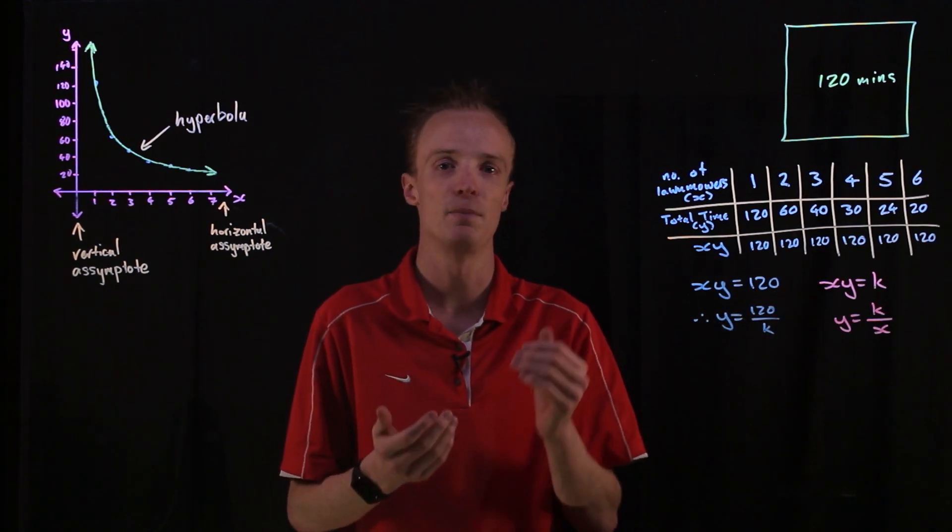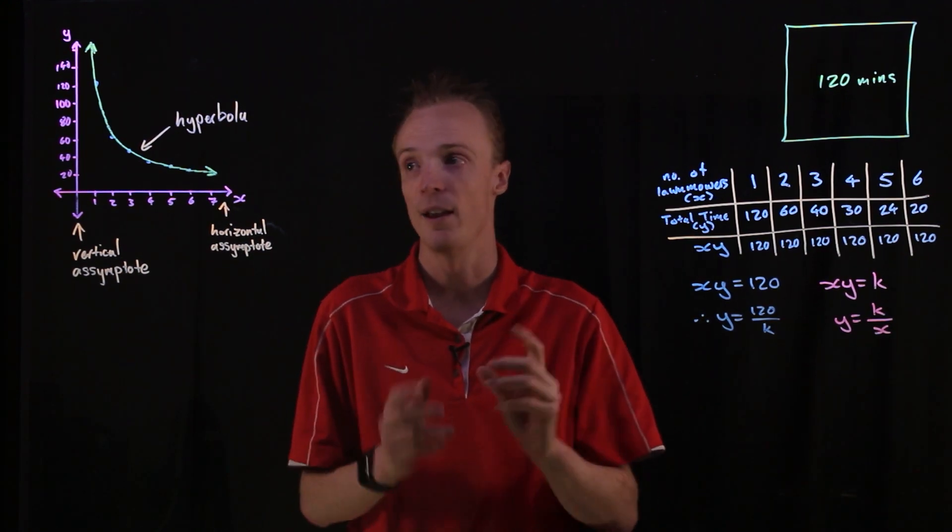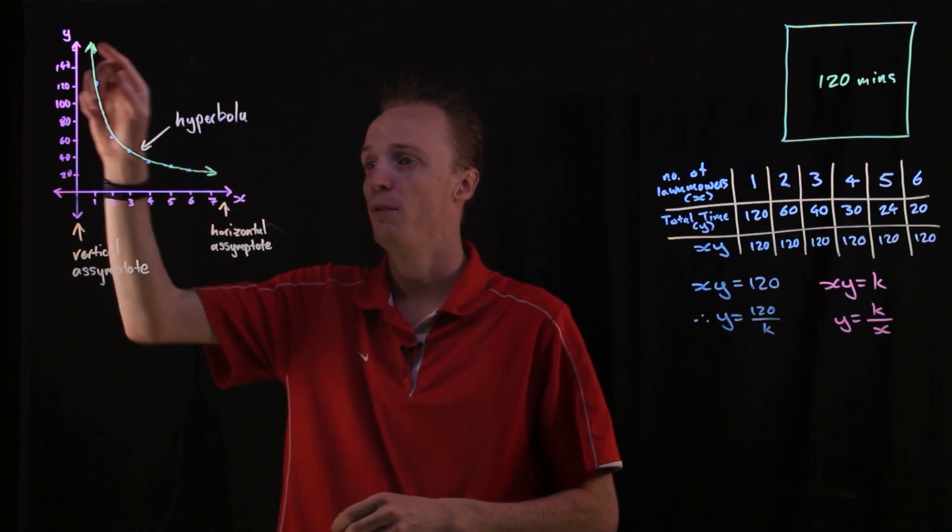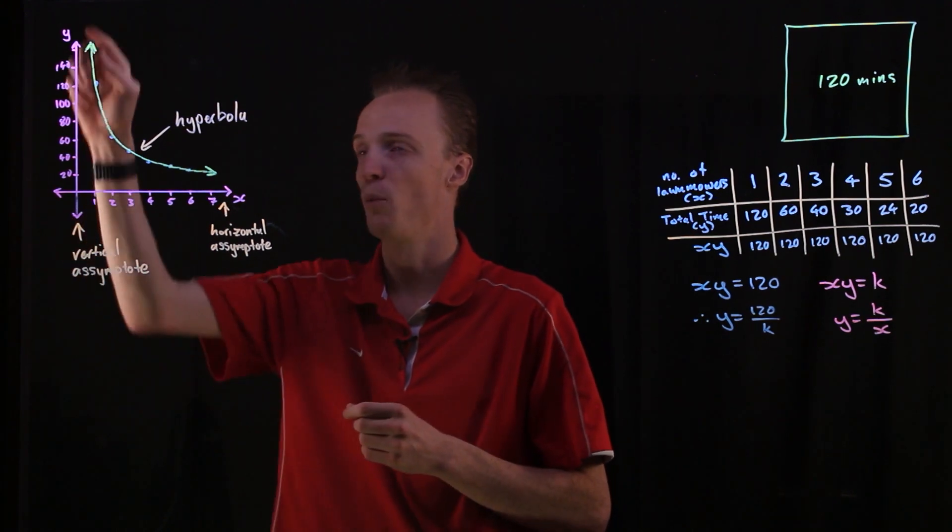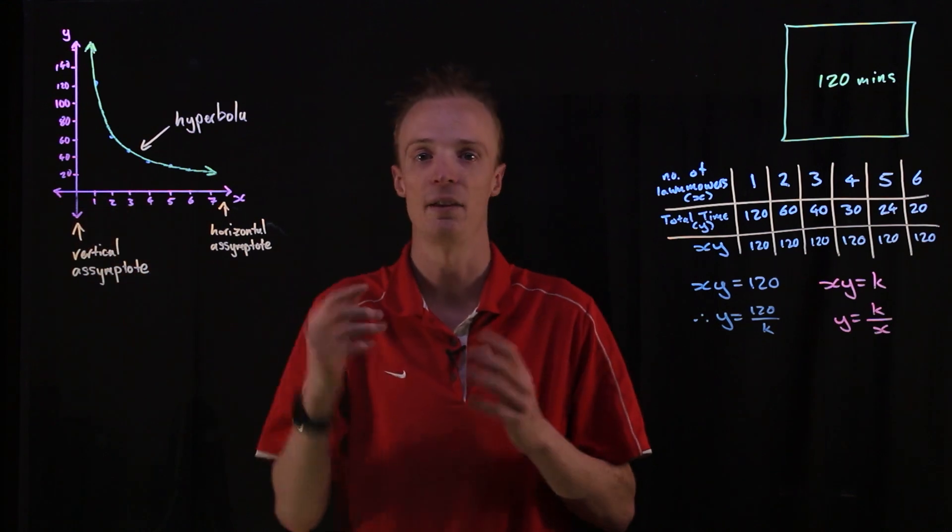If they are inversely proportional, they'll create this shape of a graph that is known as a hyperbola, where it'll have a vertical asymptote at the y-axis and a horizontal asymptote at the x-axis.